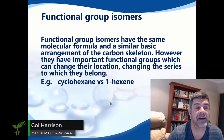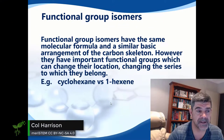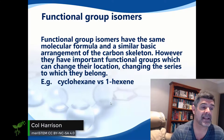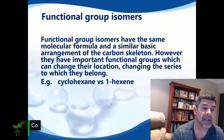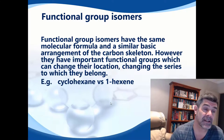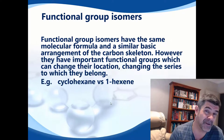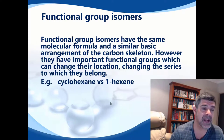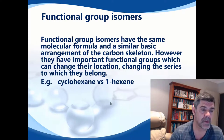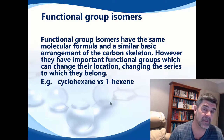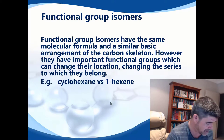The final group to look at are functional group isomers. Functional group isomers have the same basic molecular formula and a similar arrangement of the carbon skeleton. The difference is that there is now a change in the functional group, so something that we were naming previously, we've changed that name now.